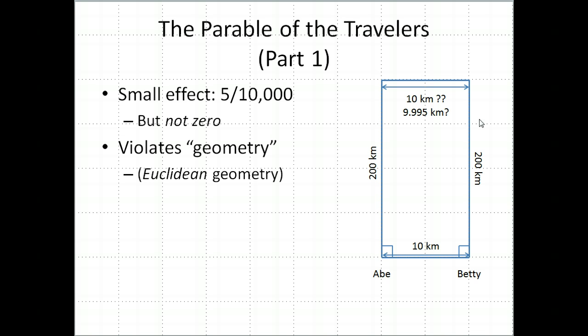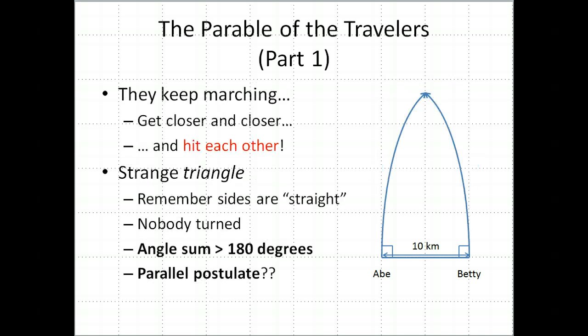Their paths should form a rectangle. But what we discover is it's actually 9.995 kilometers. It's a small effect, but it's not zero. And that's really, really strange. The travelers say, gosh, this is bizarre. This seems to violate all the rules of geometry that we expect, by which they mean Euclidean geometry. Now, they don't get too weirded out by this. They don't throw up their hands. They keep marching, and something even weirder happens. They keep getting closer and closer and closer together, and eventually they hit each other.